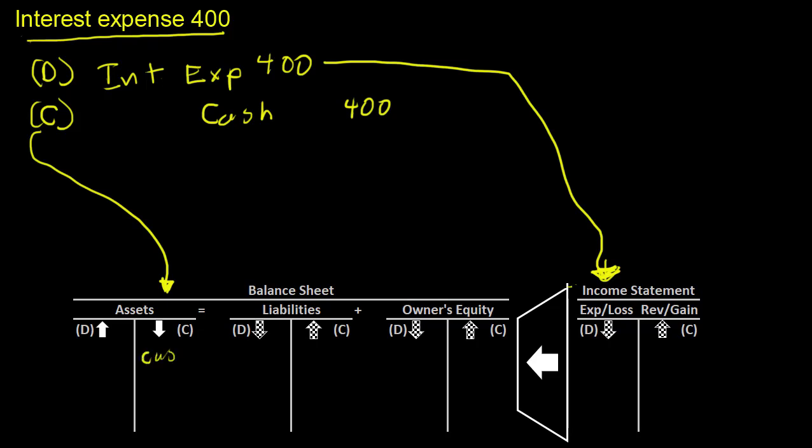So cash would be credited $400 out of here, and this T account shows it's going to be reduced. Interest expense of $400 is reducing your income statement, which transfers over to your owner's equity. So our assets go down by $400, and our owner's equity, which is fed by our income statement, goes down by $400 also.